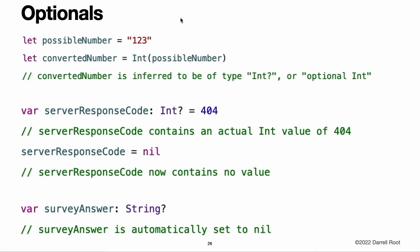Optionals. You use optionals in situations where a value may be absent. An optional represents two possibilities: either there is a value and you can unwrap the optional to access that value, or there is not a value at all. The concept of optionals does not exist in C or Objective-C. The nearest thing in Objective-C is the ability to return nil from a method that would otherwise return an object, with nil meaning the absence of a valid object. However, this only works for objects — it does not work for structures, basic C types, or enumeration values. For these types, Objective-C methods typically return a special value such as NSNotFound to indicate the absence of a value. Swift's optionals let you indicate the absence of a value for any type at all without a need for special constants.